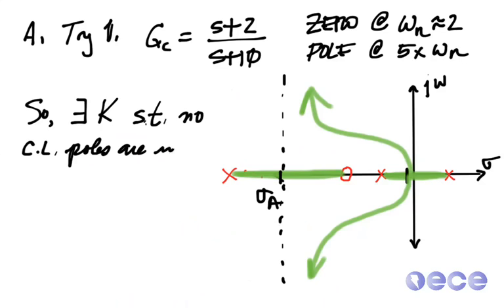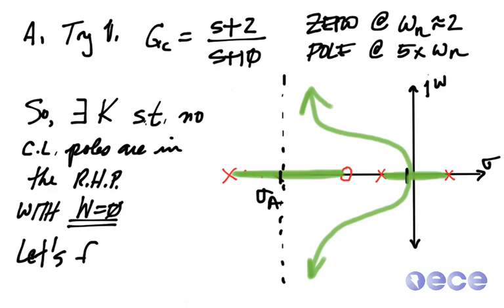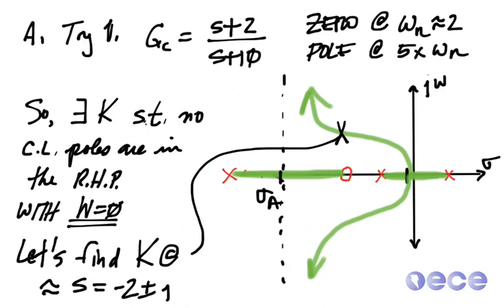So we know there exists some k such that there are no closed-loop poles in the right-hand plane. As long as we have a disturbance equal to zero, we'll be stable. So let's go ahead and find some k that's around this point. This is around s equals minus 2 plus or minus j 1.2.